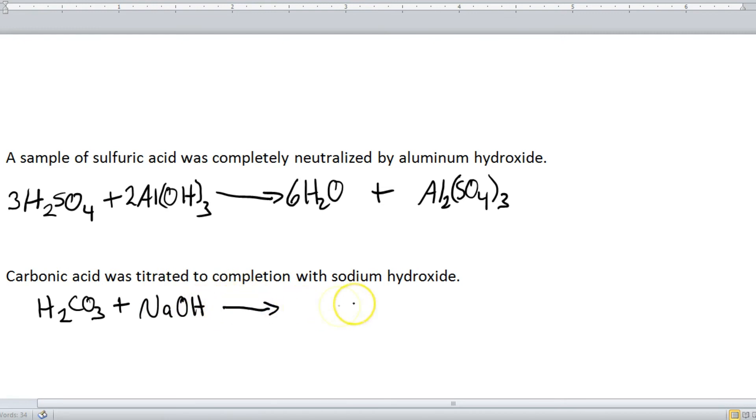Alright, on to the products. Our first product is H2O, and then the second product here is going to be the two ions left over, carbonate and sodium. Well, sodium is going to go first, because it's the positive ion. Carbonate goes second. Sodium is plus one, carbonate is negative two, so we need two sodiums, Na2CO3.